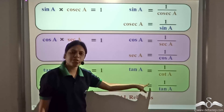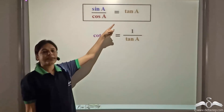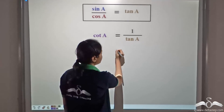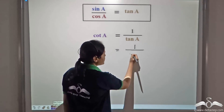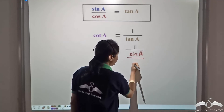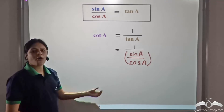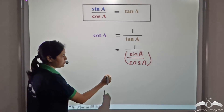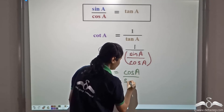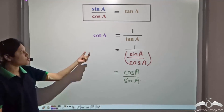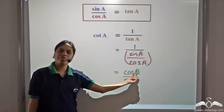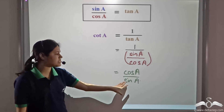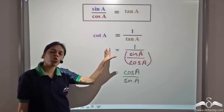Now, see that cot A is equal to one by tan A. Also, we know that tan A is equal to sin A by cos A. So, cot A equal to one by tan A can be written as one by sin A divided by cos A, because we have already defined tan A as sin A by cos A. Further, this can be written as cos A by sin A. So, cot of an angle is the ratio of cos of that angle to sin of that angle: cot A is equal to cos A by sin A. So, if we know the sine and cosine of an angle, we can find the tan and the cot for that angle.